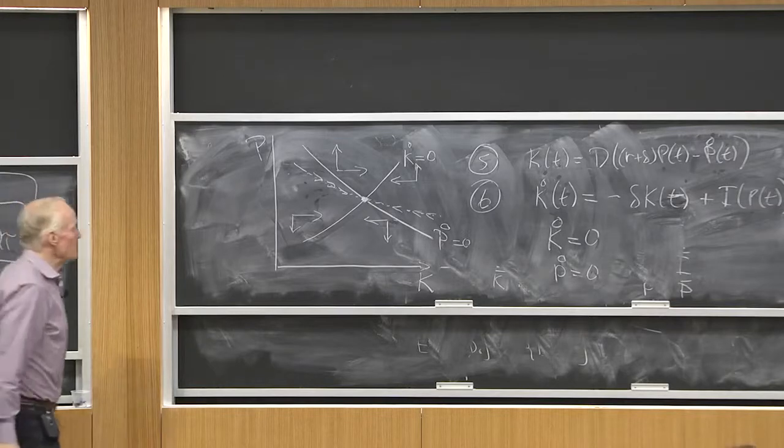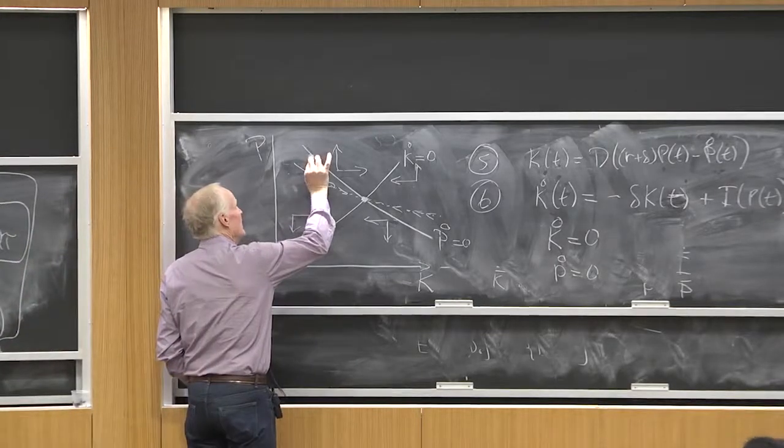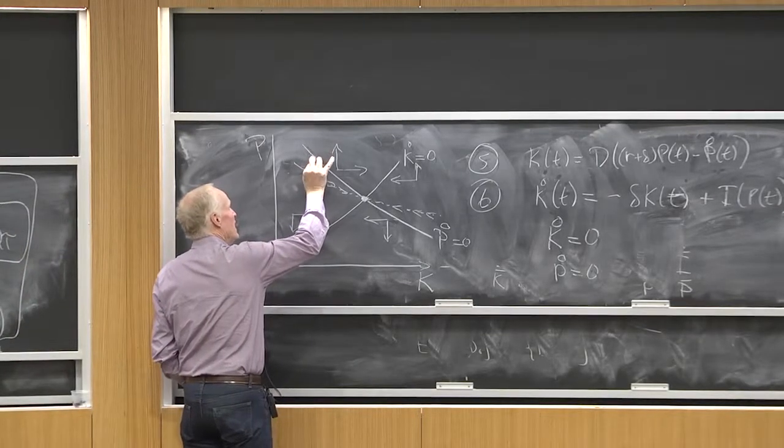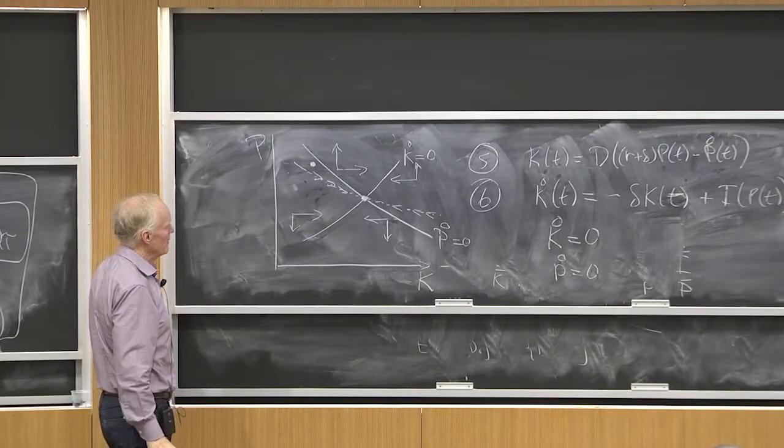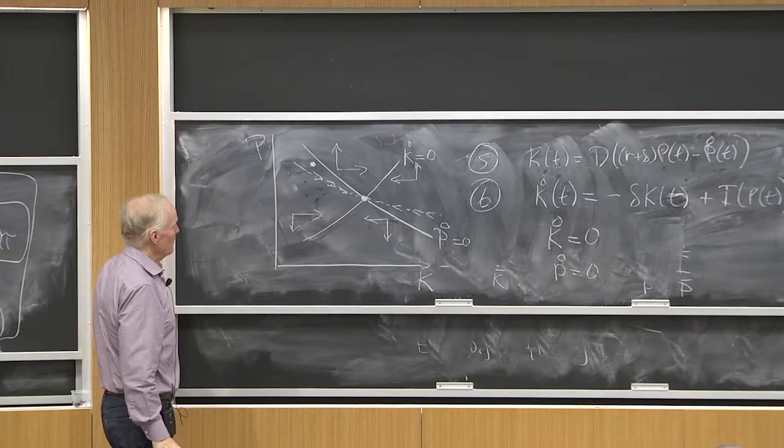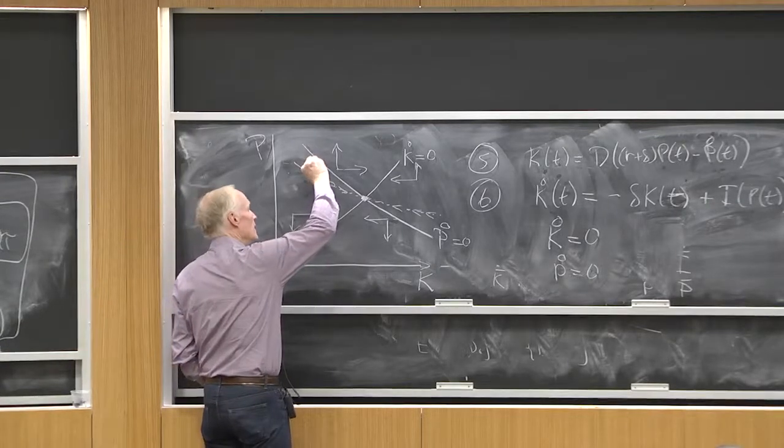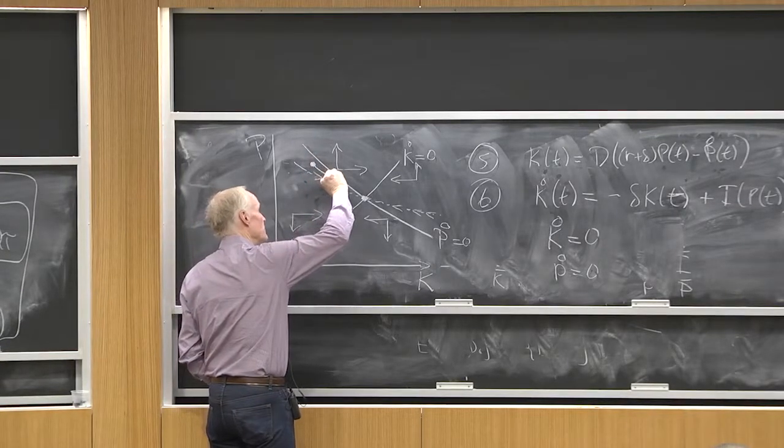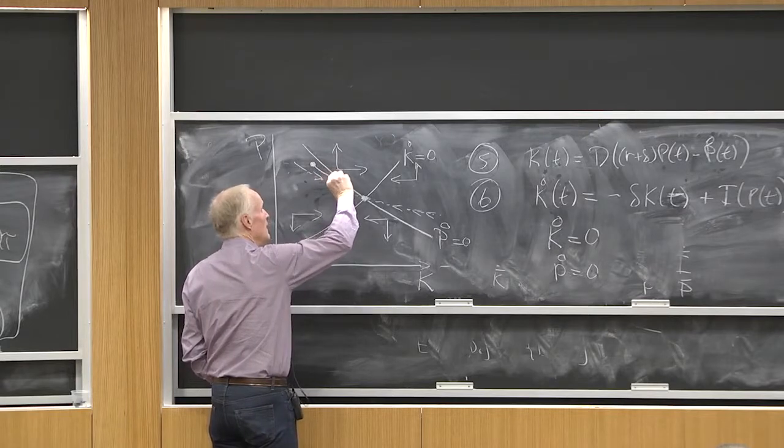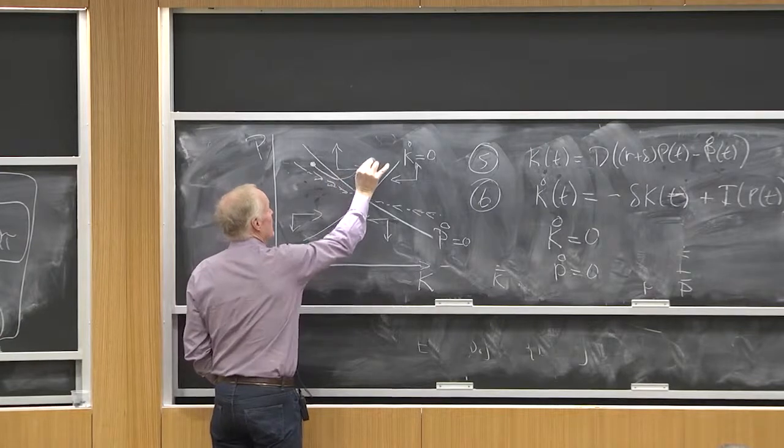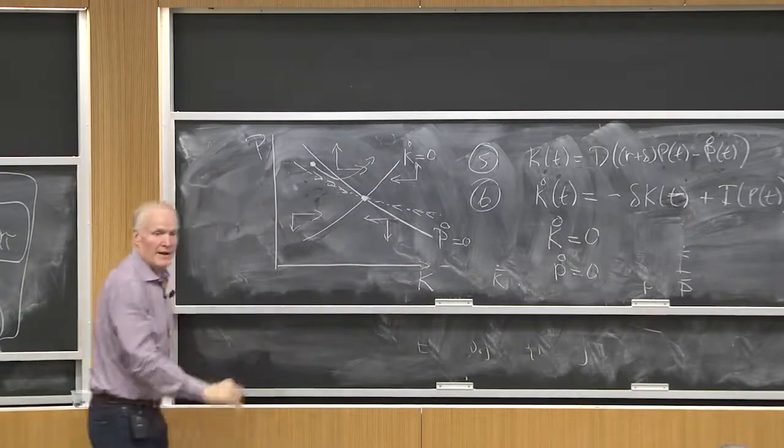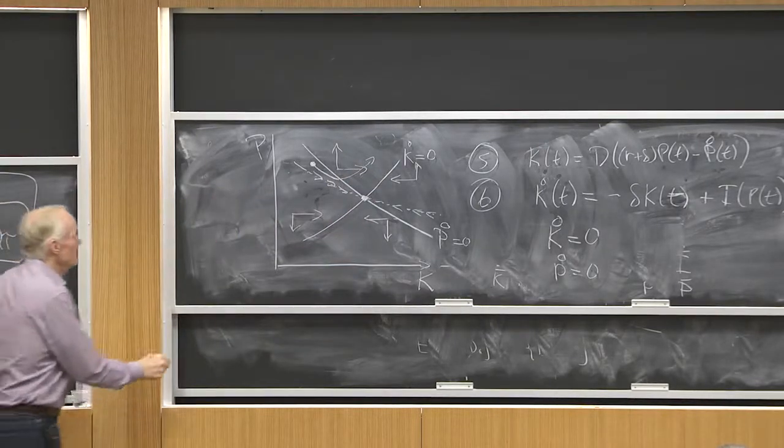Now, you might say, what would happen if I started above this line? Does anybody know what would happen? I'm going to go here, and then eventually I'm going to hit this curve, and then p dot is going to change sign, and I'm going to go off that way.